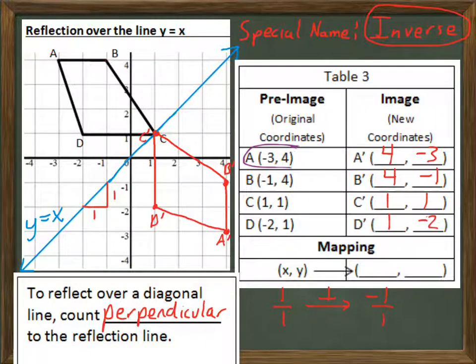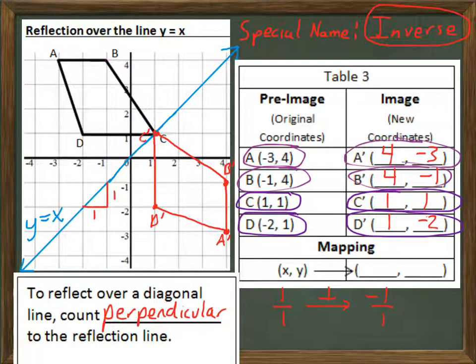If you notice, like negative 3, 4 became 4, negative 3. Negative 1, 4 became 4, negative 1. 1, 1 stayed 1, 1. And negative 2, 1 became 1, negative 2. The x and y coordinates switched places.